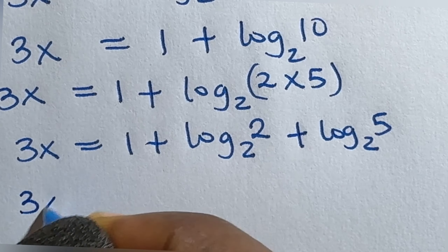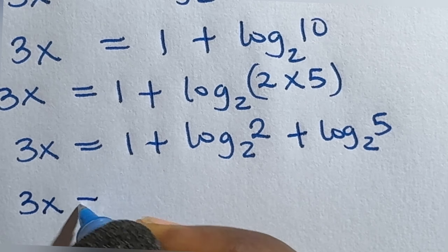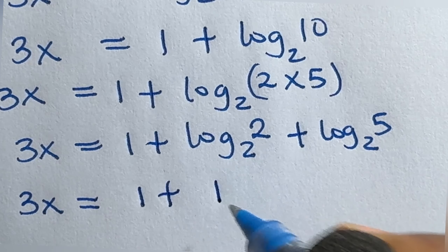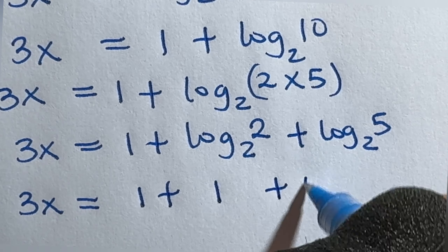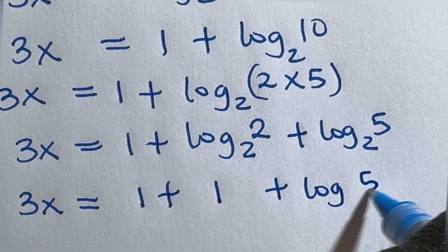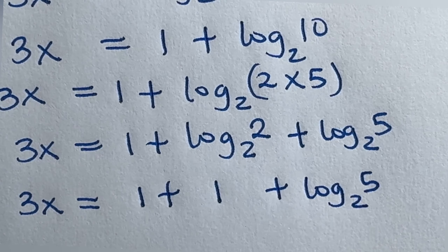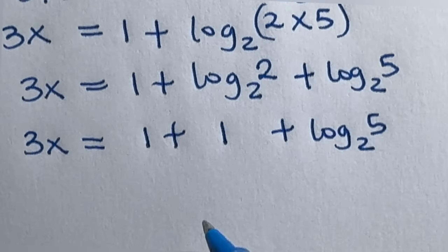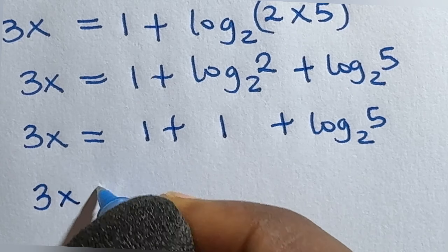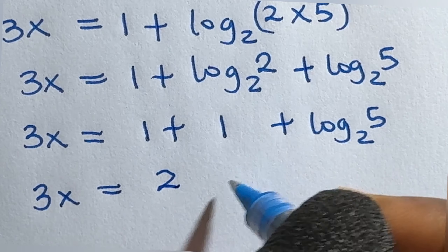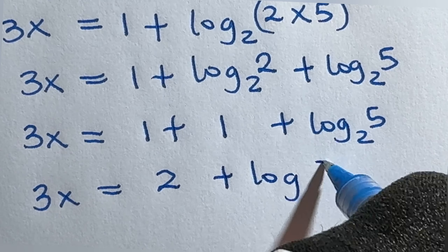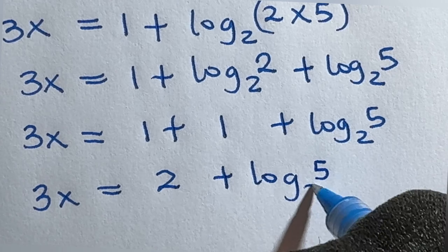So we have 3x equal to 1 plus 1 plus log₂5. Tidying this up, this becomes 3x equal to 2 plus log₂5.